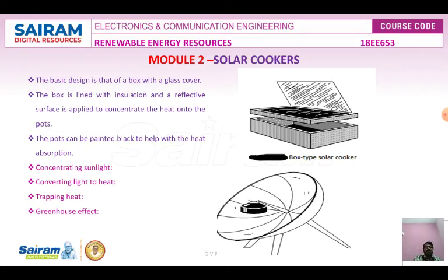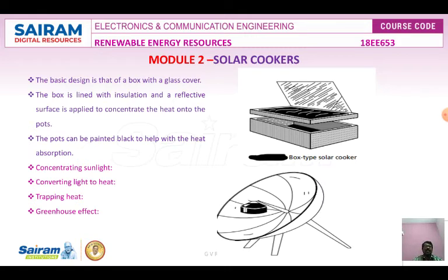Solar cooking is a technology that has been getting a lot of attention in recent years, especially for developing countries. The basic design is a box with a colored interior covered with a glass cover. There are various types of solar cookers that harness solar energy for cooking — box type, dish type, community solar cooker, and advanced solar cooker.